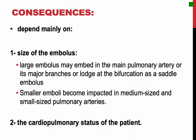The pathophysiologic consequences of pulmonary thromboembolism depend largely on two factors: first, the size of the embolus, and second, the cardiopulmonary status of the patient, meaning the general state of the circulation. A large embolus may embed in the main pulmonary artery or its major branches, or even at the bifurcation as a saddle embolus, while smaller ones become impacted in medium-sized and small-sized pulmonary arteries.